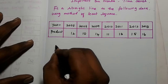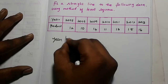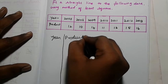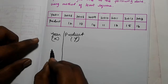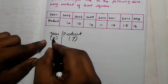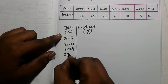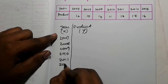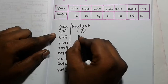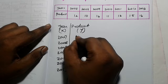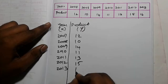The given year is small x and the product is capital Y. So the years are: 2007, 2008, 2009, 2010, 2011, 2012, 2013. The product — sometimes product will be sales — values are: 12, 10, 14, 11, 13, 15, 16.